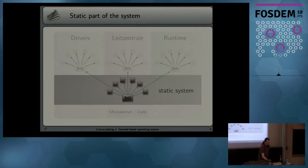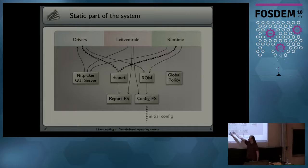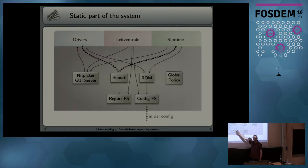Let's take a look at this static system. We need to multiplex the displays among several components - we want the user to type things in the Leitzentrale but also interact with the runtime environment. So we need a GUI multiplexer: this is the role of the nitpicker GUI server. It's a small component, about 2,000 lines of code, with no libc dependency. It's really a small component, so we can trust it.